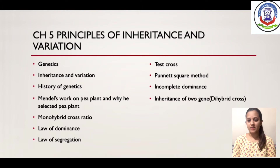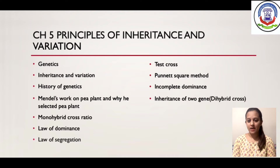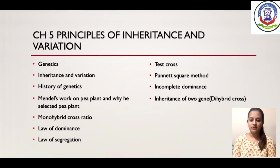We discussed about genetics, inheritance, variation, then history of genetics, monohybrid and dihybrid cross given by Mendel. We also learnt about incomplete dominance and test cross with the help of Punnett square method.